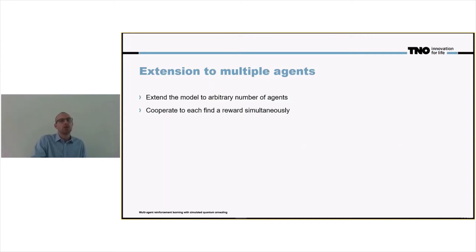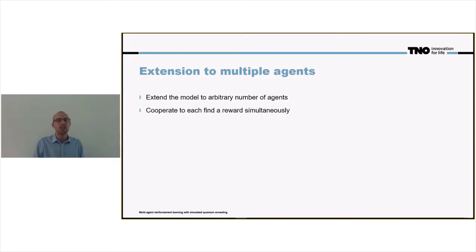We can also define a similar model for an arbitrary number of agents that has to cooperate to find a different number of rewards simultaneously — for instance, two agents that simultaneously have to obtain two different rewards.